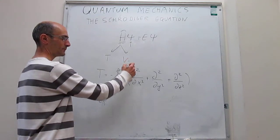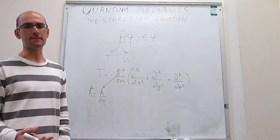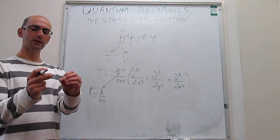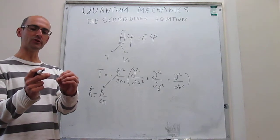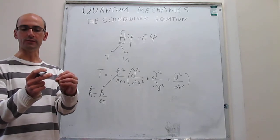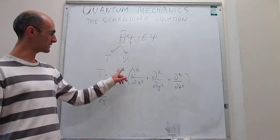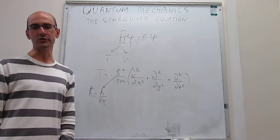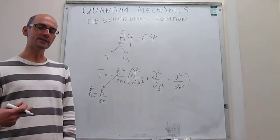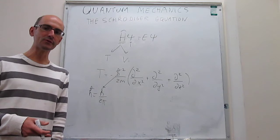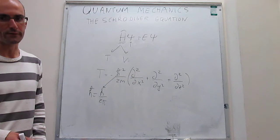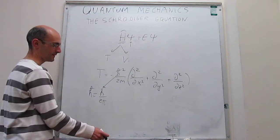We also have to talk about the potential energy term, but this depends on the system. For example, if we're thinking about an electron in an atom — say a hydrogen atom — that potential term would account for the attractions between the electron and the positive charge in the nucleus. We will see how this potential energy term develops as we look at concrete examples, but for now it's a bunch of mathematical operations that apply to the wave function and return the potential energy multiplied by the wave function.